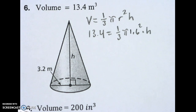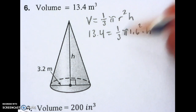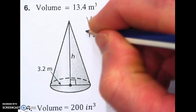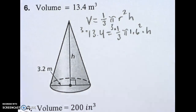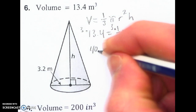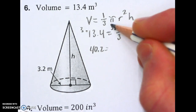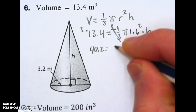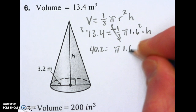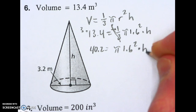So, now I'm going to multiply to get rid of this 1/3. I'm going to times by 3 on both sides. My first step. So, that gets me 40.2. So, 3 and the 1/3, they cancel out. And I'm left with pi 1.6 squared times the height.